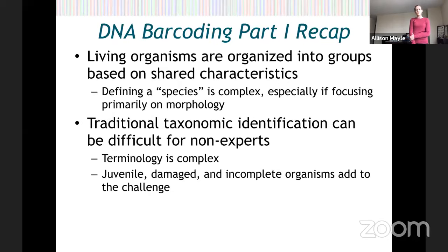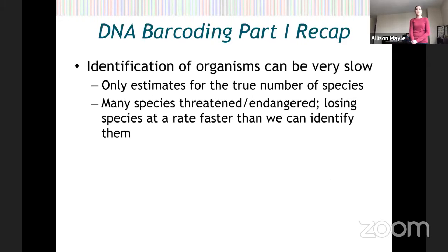Traditional methods using taxonomy are really difficult for non-experts. The terminology is very complex. Bits of organisms or juvenile organisms, things that are damaged, can be very hard to identify. Traditional methods of identifying organisms are also very slow. We only have estimates of the true number of species on Earth, and many species are threatened or endangered. We're actually losing species at a rate faster than we can identify them.